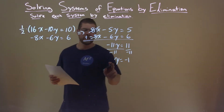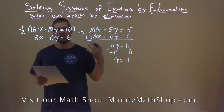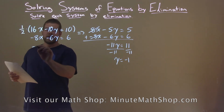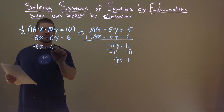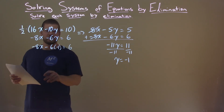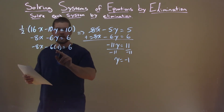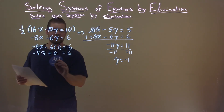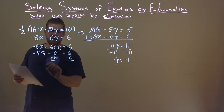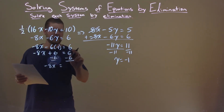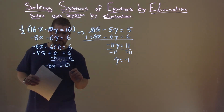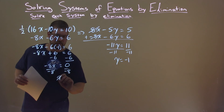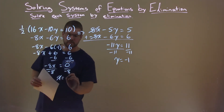We then take that information and plug it into one of our equations — whichever we think is easier. Let's pick the second equation. Negative 8x minus 6 times negative 1 equals positive 6. Negative 6 times negative 1 is positive 6, so negative 8x plus 6 equals 6. Subtract 6 from both sides: negative 8x equals 0. Divide both sides by negative 8, and x equals 0 divided by negative 8, which is still 0.